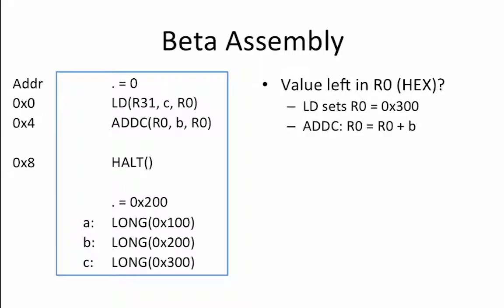Next, an ADDC of R0 with a constant B is performed and that result is stored back into R0. The dot equals 0x200 notation immediately preceding the A label tells us that address A equals 0x200. This means that address B equals 0x204 and C equals 0x208. So if we are adding the constant B to R0, R0 now becomes 0x300 plus 0x204 which equals 0x504.